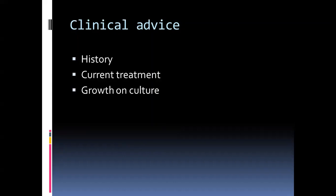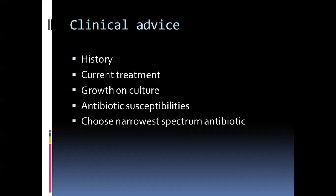Once there is growth on culture, you can ask the laboratory whether the organism that is growing — if it is a sterile sample — is gram-positive or gram-negative, and that can help in further narrowing down your treatment options. A broad-spectrum antibiotic can be narrowed to one that covers at least one class of organisms and not both. And once you have antibiotic susceptibilities, it can further narrow down your antibiotic choice by choosing the narrowest spectrum, because choosing broad-spectrum antibiotics contributes to antimicrobial resistance in the community.